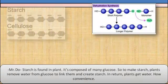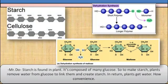Starch is found in plants. It's composed of many glucose. So to make starch, plants remove water from glucose to link them together and create starch. In return, plants get water. How convenient.